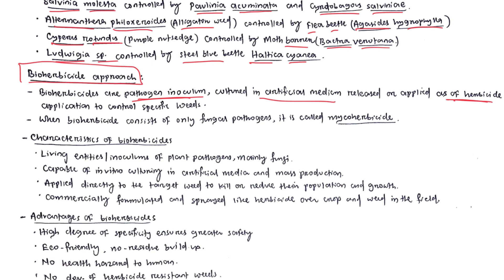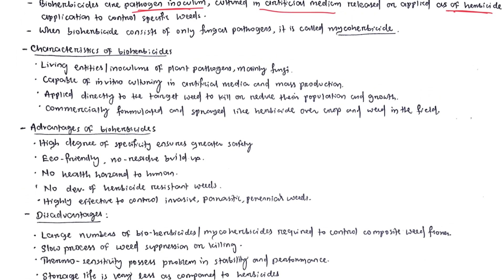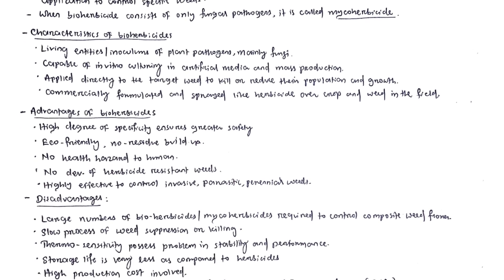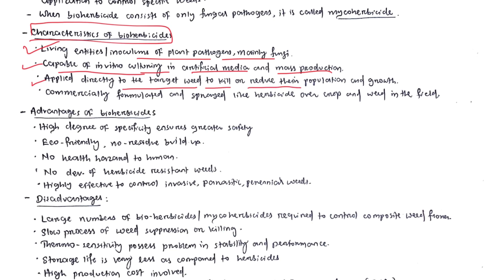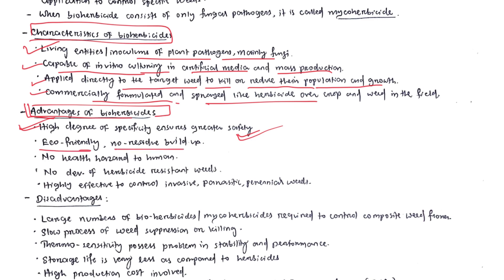We have to apply this micro-herbicide again and again, as with conventional herbicide. Characteristics of bio-herbicide: it is a living entity containing a plant pathogen — most specifically fungi — capable of in vitro culturing in artificial media and mass production. It is applied directly to the target weed to kill or reduce weed growth, and is formulated and spread like a herbicide over the crop canopy. Advantages include high specificity, greater safety, eco-friendliness, no residue build-up, and no health hazard to humans.